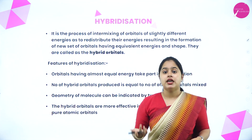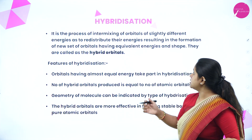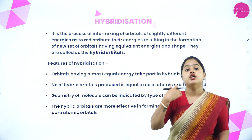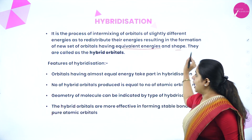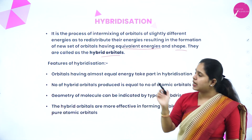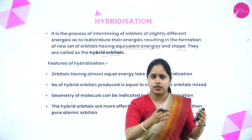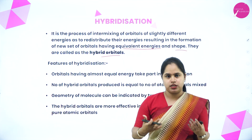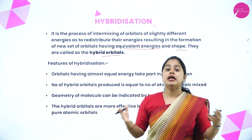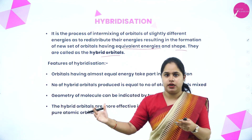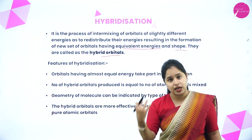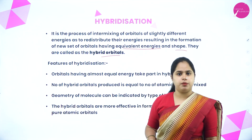Hybridization is defined as the process of intermixing of orbitals of slightly different energies so as to redistribute their energies, resulting in the formation of a new set of orbitals having equivalent energies and shape. These are called hybrid orbitals. In the case of CH4, 2s and 2p have only a very small energy difference, so the s and p orbitals intermix to form equivalent orbitals having same energy and shape.